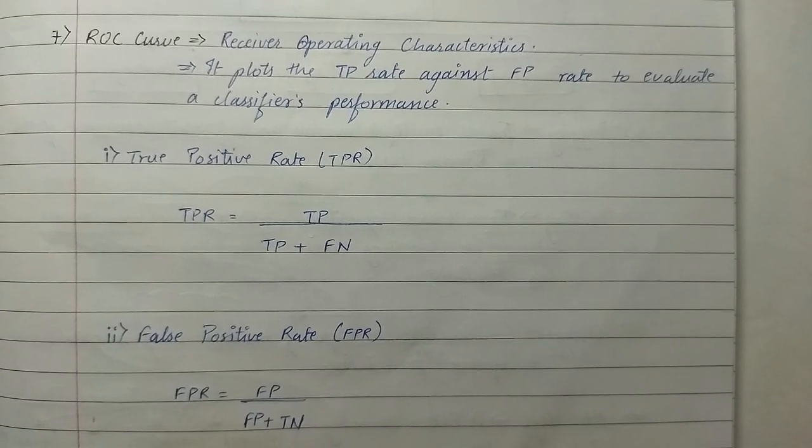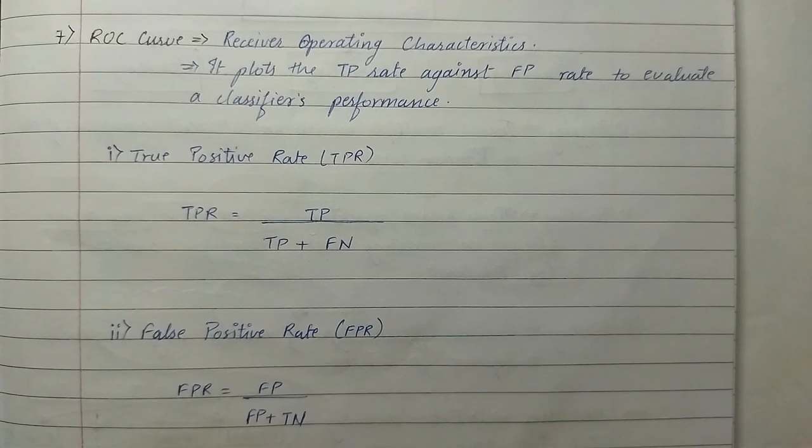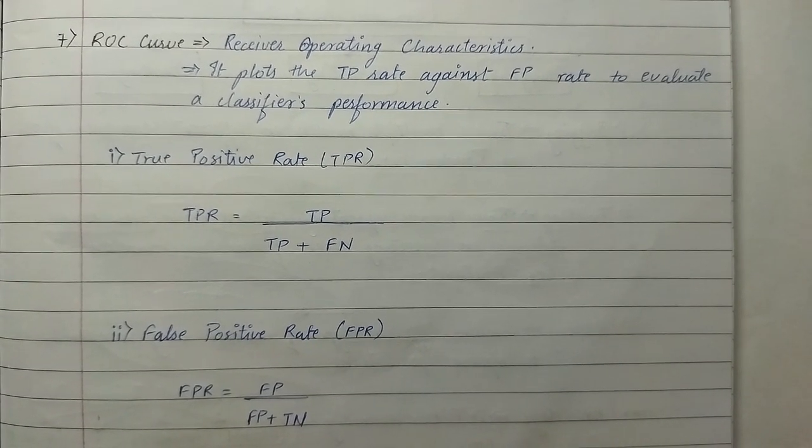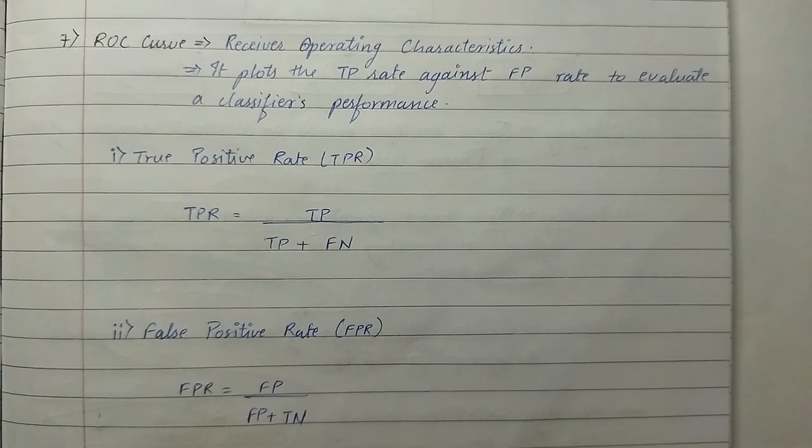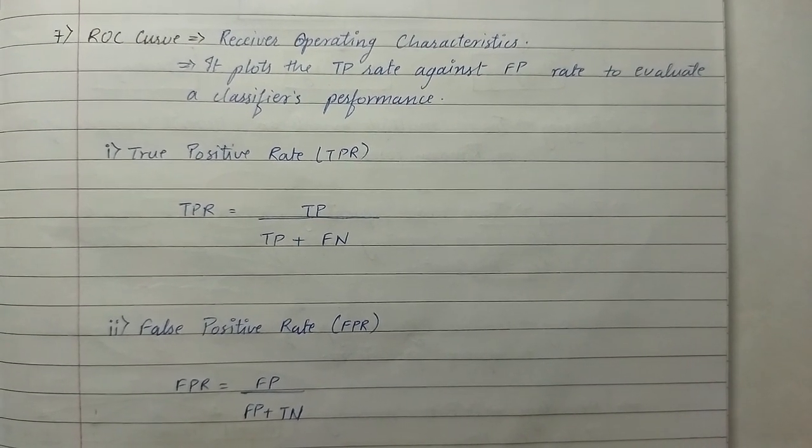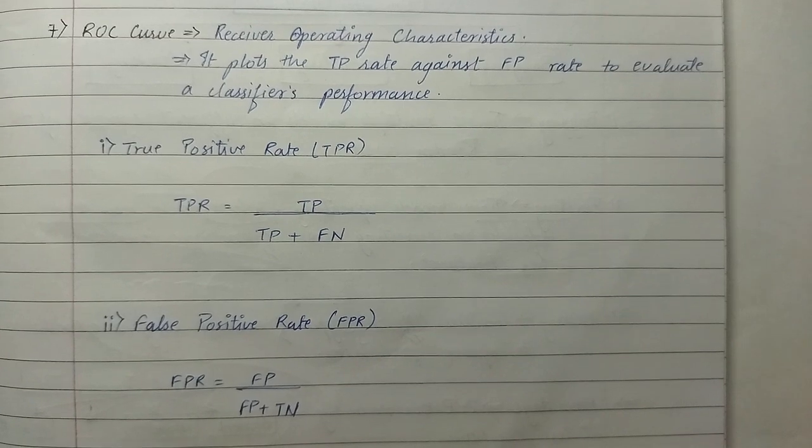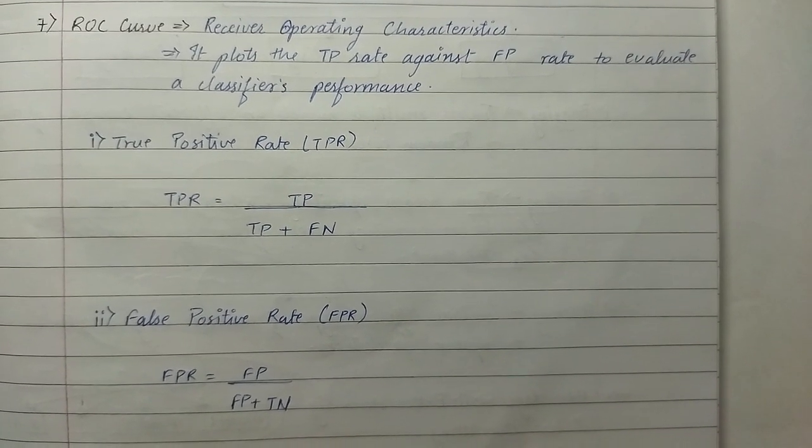The seventh performance matrix is ROC curve, that is receiver operating characteristics. It plots the true positive rate against false positive rate to evaluate a classifier's performance.